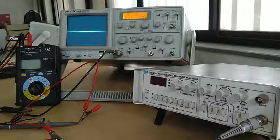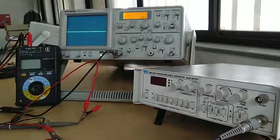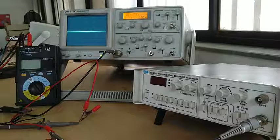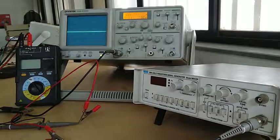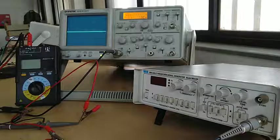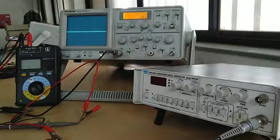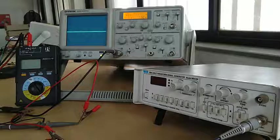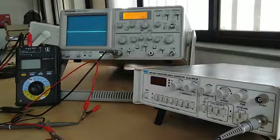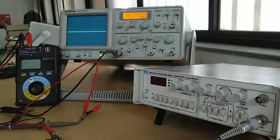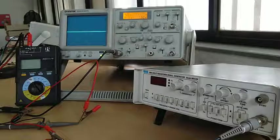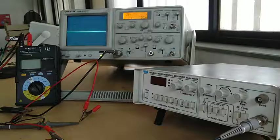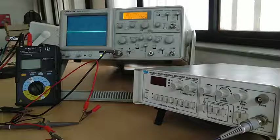In this demonstration of AC voltage measurement, we need the CRO, an AC voltage source which is a function generator, and for measuring actual AC voltage, we will use the digital multimeter. So three different instruments are needed, along with connecting wires—the crocodile wires—as well as CRO probes for making connections from the AC voltage source to the oscilloscope.